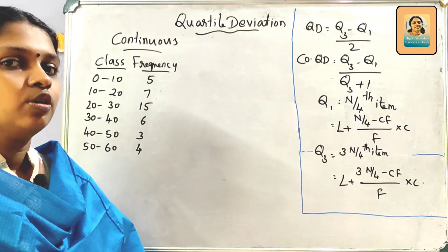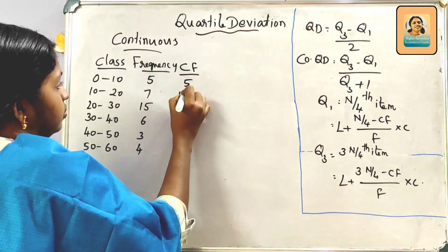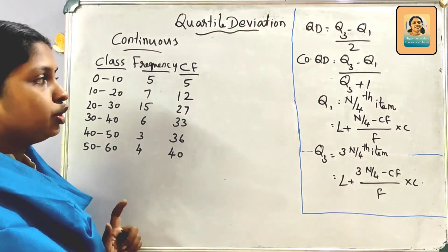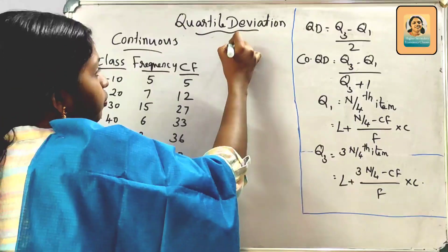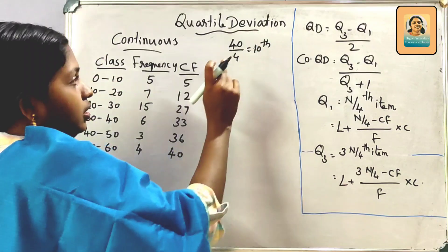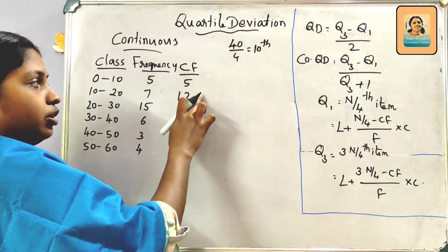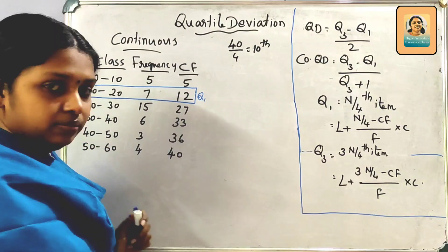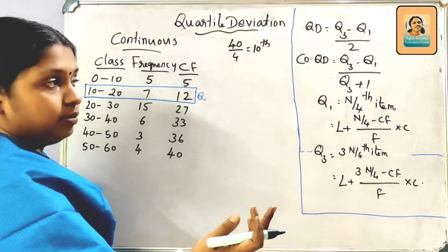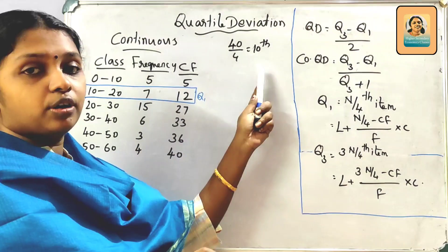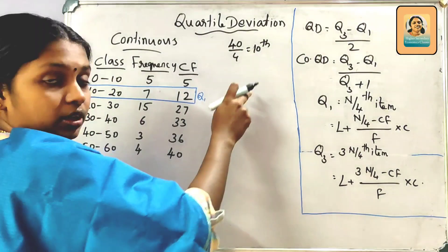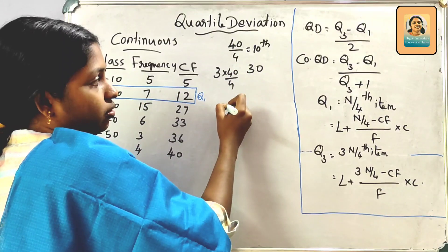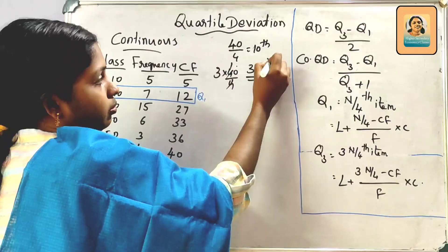For continuous series, Q1 = n/4. With n = 40, Q1 = 40/4 = 10th item. The cumulative frequency value is 12. Q3 = 3n/4 = 3 into 40/4 = 30th item. That is the cumulative frequency for Q3. We then select Q3 in this class.